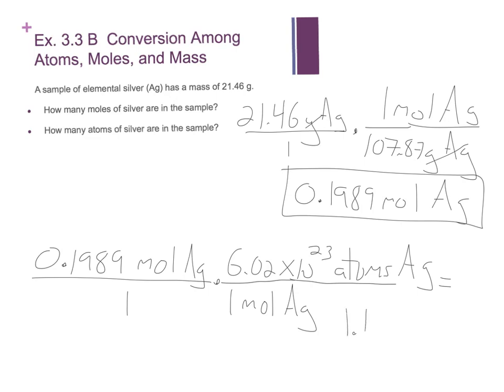1.197, 4 sig figs still, times 10 to the 23rd. Units are atoms of silver. Atoms Ag. All right?